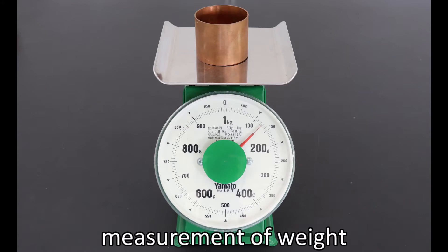With the top plate scale, you place the object to be measured on the top plate and measure its weight. To measure, read the value indicated by the red needle in the screen.